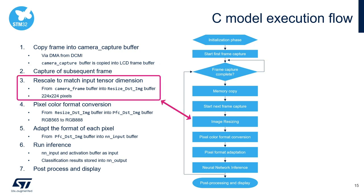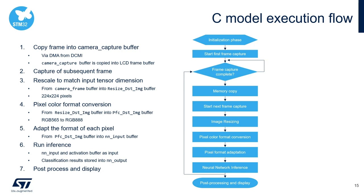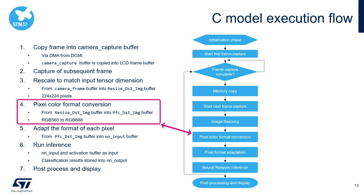Next, rescale the image contained in the camera frame buffer into the resized destination image buffer. Then perform pixel color format conversion and red-blue color channel swapping from the resized destination image buffer into the PFC destination image buffer. For instance, in the food recognition example, the RGB 565 capture format is converted to the RGB 888 format to provide the three input channels expected by the food recognition CNN model.